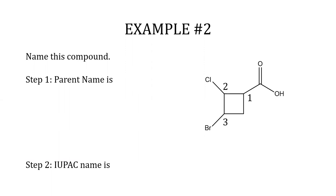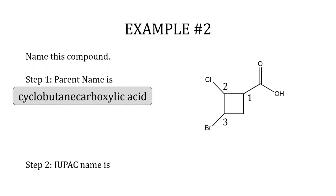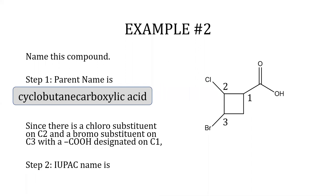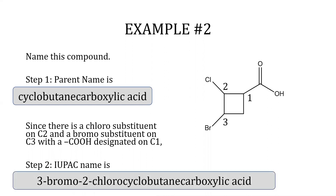Example two has a parent of cyclobutane carboxylic acid. There is a chloro substituent on C2 and a bromo substituent on C3, with the COOH group designated on C1. The IUPAC name is 3-bromo-2-chlorocyclobutane carboxylic acid.